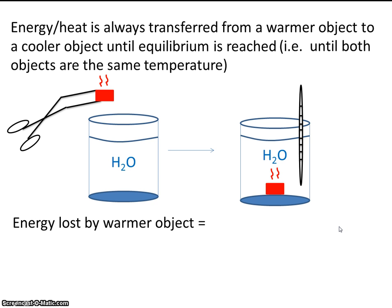The energy lost by the warm object will be equal to the energy gained by the cool object. So if we know how much energy this water gained, we also know how much energy this hot piece of metal lost. Because however much energy this metal loses is how much energy this water gains. Because as this hot piece of metal gives off energy, the only place that energy can go is into the water, especially if this cup is insulated well.